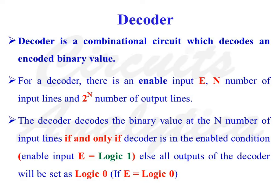The decoder operates if and only if it is in the enabled state, meaning enable input E is equal to logic 1. If enable input E is equal to logic 0, the decoder is in the disabled condition and all outputs will be set as logic 0.